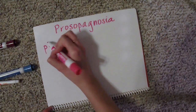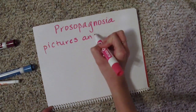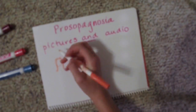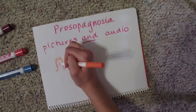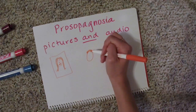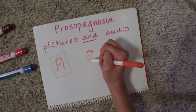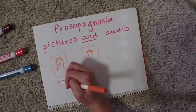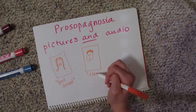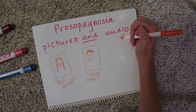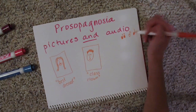Treatment for prosopagnosia practices helping the patient recognize individuals. The clinician may hold up photographs and then give audio recordings of family members and good friends, and then have the patient name them. The clinician can also provide cues such as their gender, age, hair color, or other specific characteristics.